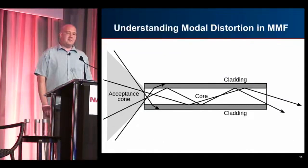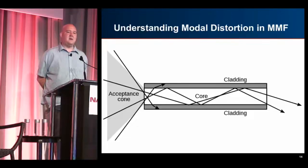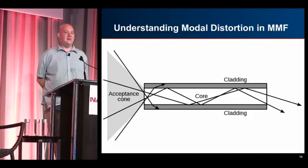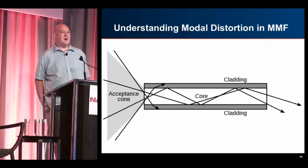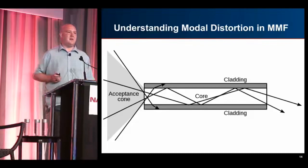A quick word about modal distortion in multi-mode: you see a couple different beams of light coming in, and the ones that are accepted propagate at different speeds and rates because the core is so wide that it allows this to happen. That's basically what you're seeing in modal distortion, and that's why you get that reach limitation with multi-mode.